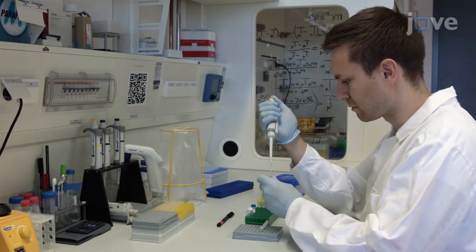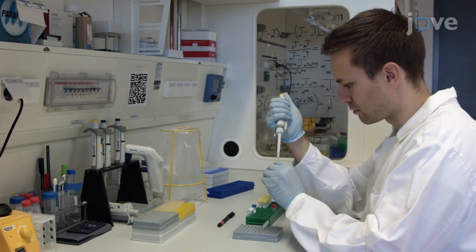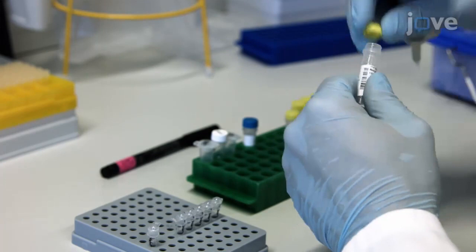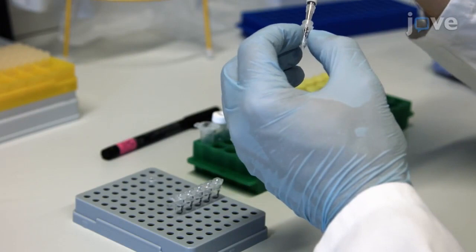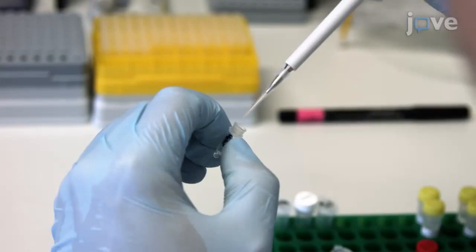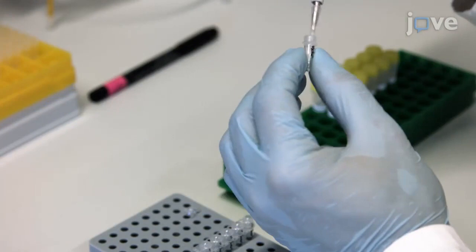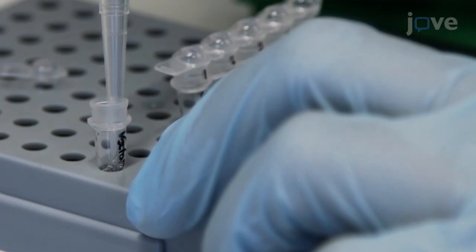To begin generating the individual cloning fragments for Gibson assembly, transfer 10 µL of high fidelity buffer to a tube. Add 1 µL of 10 millimolar dNTPs and 0.25 µL of both 100 µM overhang primers. Add 10 ng of the DNA template string or vector and 1.5 µL of DMSO. Add enough water to bring the final volume to 49.5 µL.